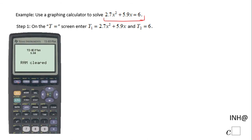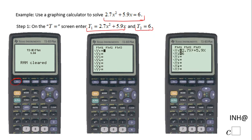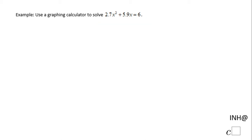Click the Y equals button, which is right here, and you're going to get a menu like this. Then you're going to type in on Y1 this equation and on Y2 this equation using the keyboard, and you can see that in my next picture right here.